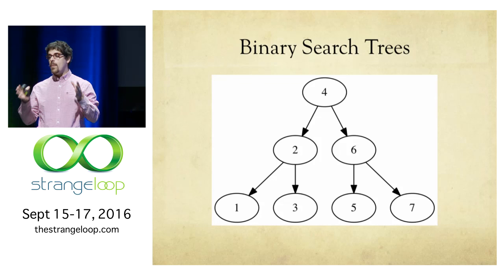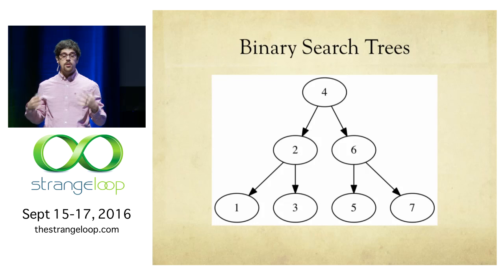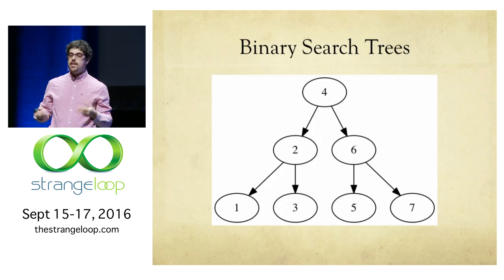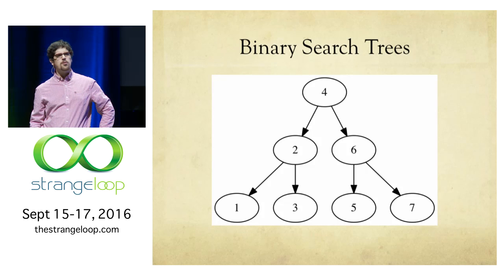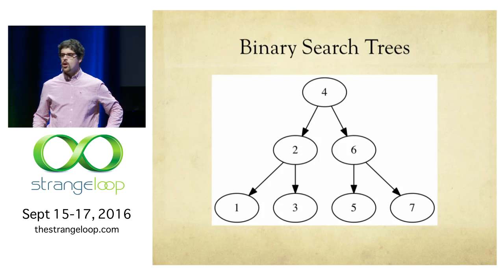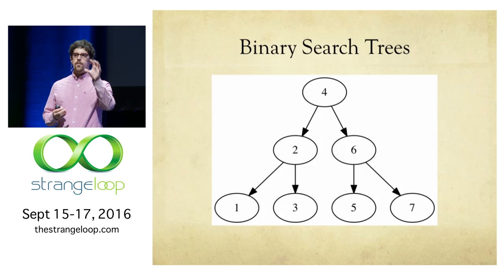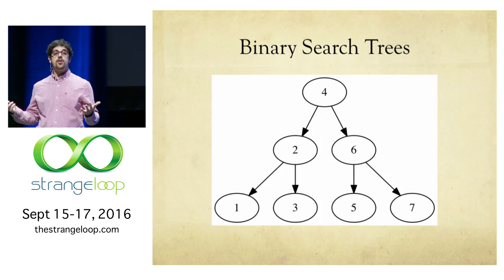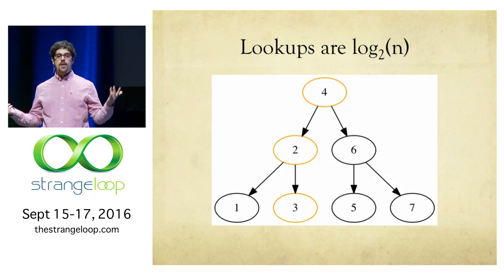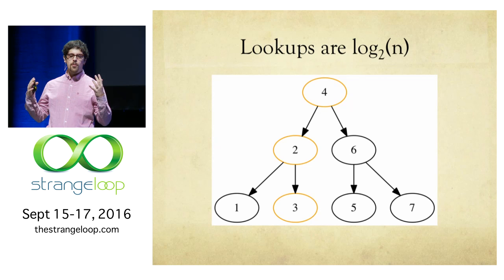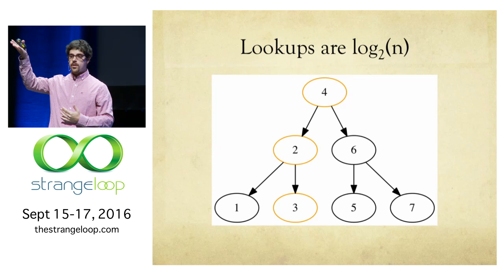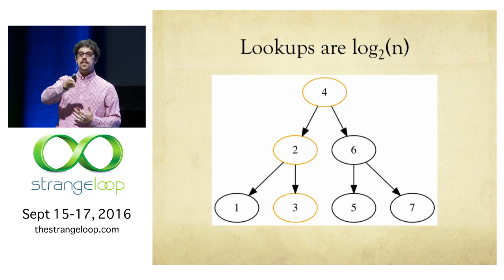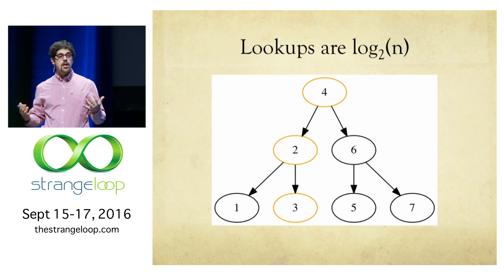Binary search trees — why are they called this? Binary because there are two children for each node. They're search trees because they're sorted, which enables us to do a search. The sort: for any node, all children to the left are less, all children to the right are greater. So if we want to look up the value three in the tree, we look at the root. The root is four, and we know three is less than four, so we descend to the left. Now we're on two — three is greater than two, so we go to the right. And lo and behold, we find three.